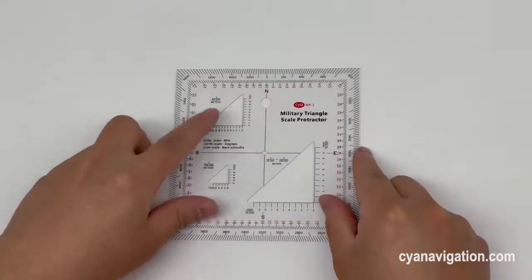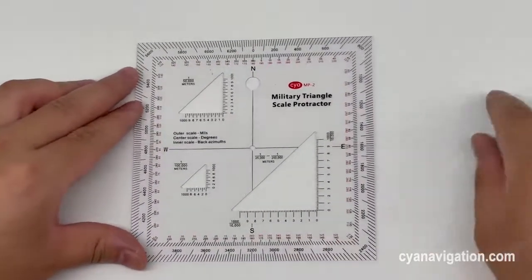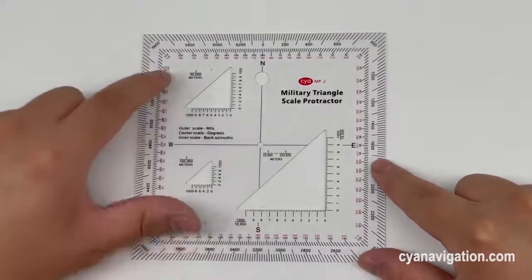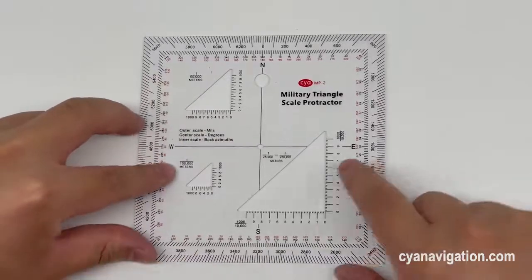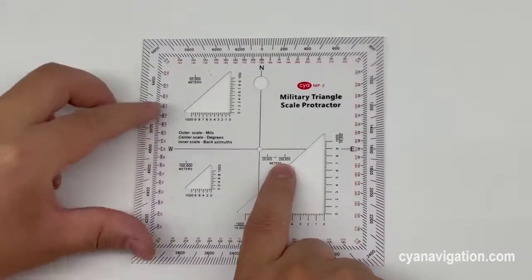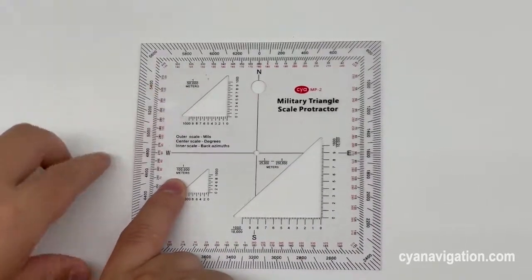It includes three cut-out triangles for marking maps with three different scales: 1:50,000, 1:25,000, and 1:100,000.